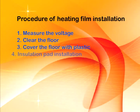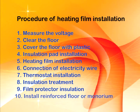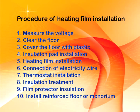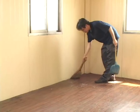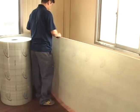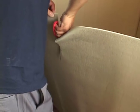First, measure the voltage and clear the floor to prevent scratches or damage to the film. If the floor is wet, such materials as plastic can be used to prevent the humidity.